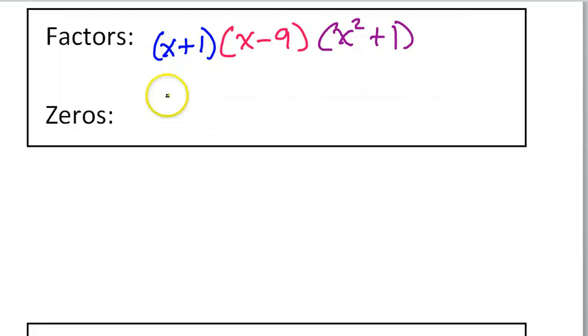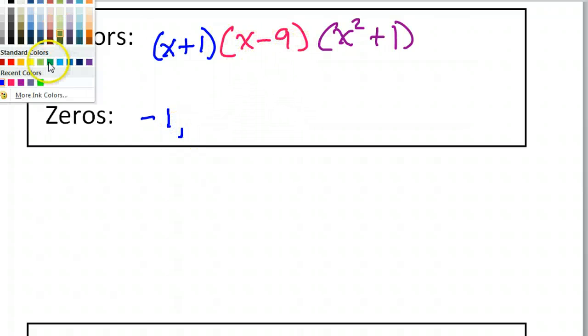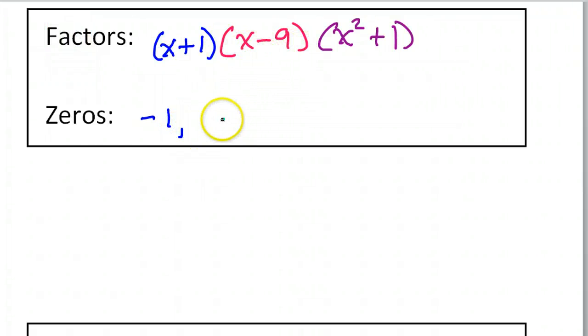Now as far as the zeros, x plus 1 will give us the zero of negative 1, and in truth we got the negative 1 first and got the factor from that. The factor of x minus 9, if I set that equal to 0 and solved, would give me a zero of positive 9. Now I'll go ahead and show this last one. If I take x squared plus 1 and I set that equal to 0, and then I would have to subtract 1 from both sides. So that would give me x squared equals negative 1.